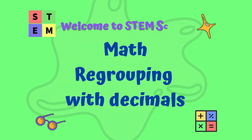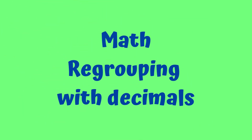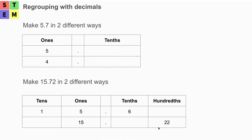Hello, welcome to STEM School. In this lesson we are going to learn regrouping with decimals. Let's take a look at what we need to do here. We will make 5.7 in two different ways. We have a table with ones place and tenths place. At the ones place in the first row, we have five.